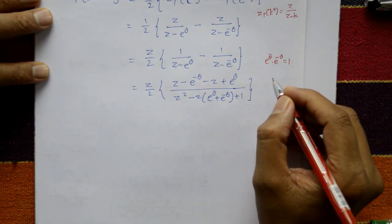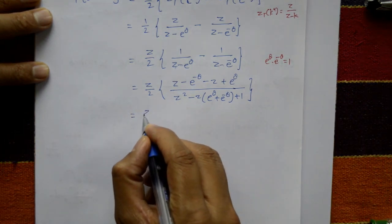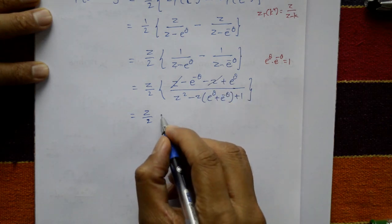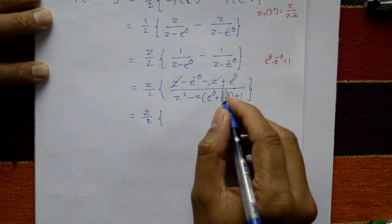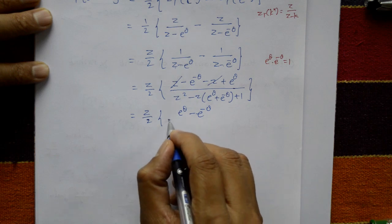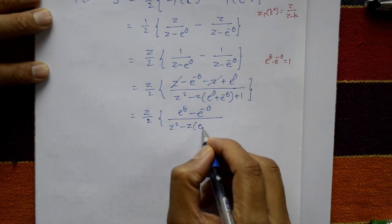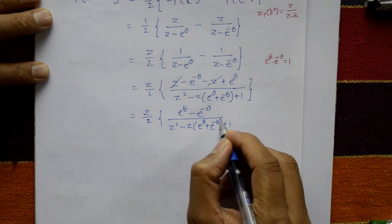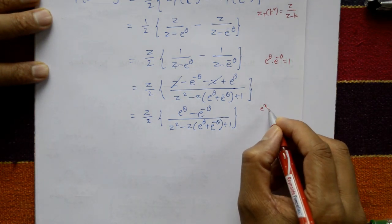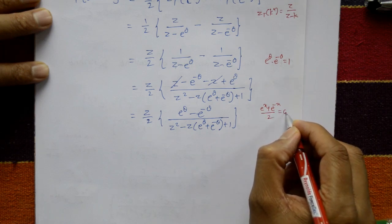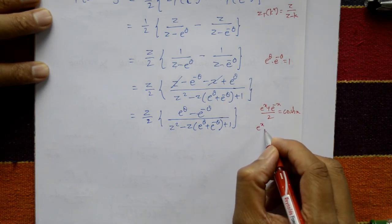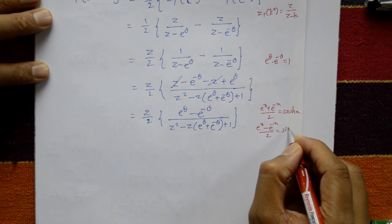The Z terms cancel, and we are left with e^θ - e^(-θ) in the numerator, divided by Z² - Z(e^θ + e^(-θ)) + 1. Recalling that (e^x + e^(-x))/2 = cosh(x) and (e^x - e^(-x))/2 = sinh(x).